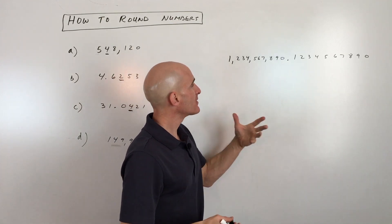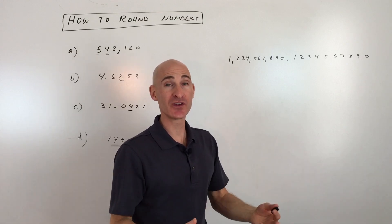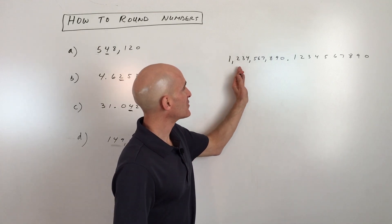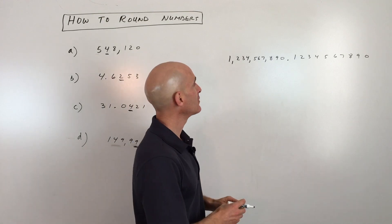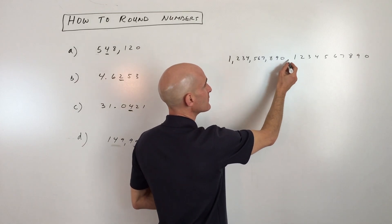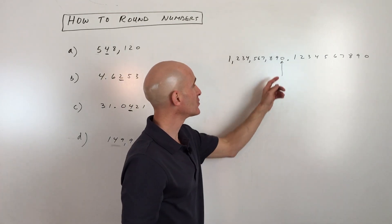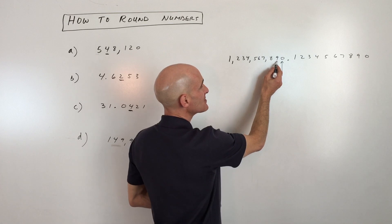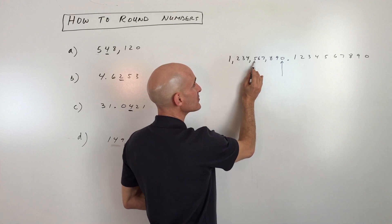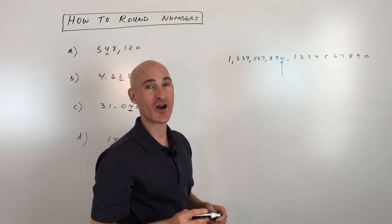What we want to understand are the places of numbers — the tenths place, hundredths place, millions place, millionths place, and the differences between all these terms. Let's take a look at a long number and break down which place we're looking at. To the left of the decimal point, you have the units place — single digits — then tens, hundreds, thousands, ten thousands, hundred thousands, millions, ten millions, hundred millions, billions, and so on.